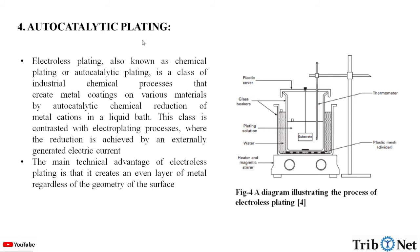Next is auto catalytic plating. Electroless plating, also known as chemical plating or auto catalytic plating, is a class of industrial chemical processes that create metal coatings on various materials by auto catalytic chemical reduction of metal cations in a liquid bath. This class is contrasted with the electroplating process where the reduction is achieved by an externally generated electric current. The main technical advantage of electroless plating or auto catalytic plating is that it creates an even layer of metal regardless of the geometry of the surface. Here in the figure we can see a diagram illustrating the process of electroless plating or auto catalytic plating.